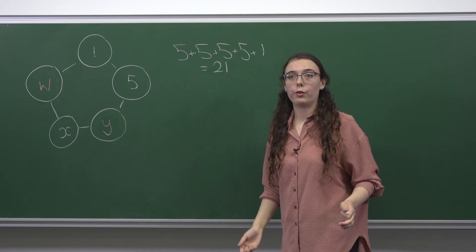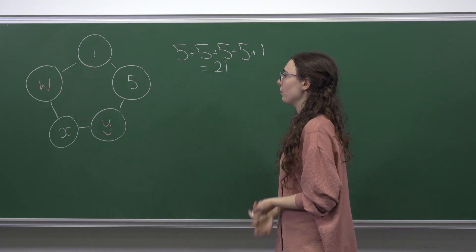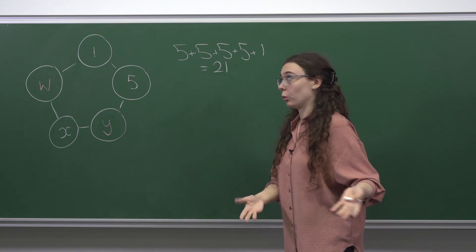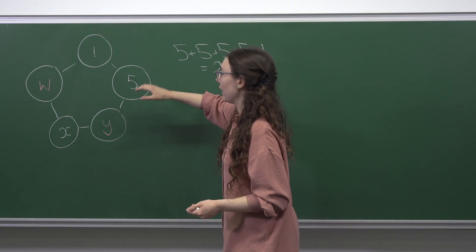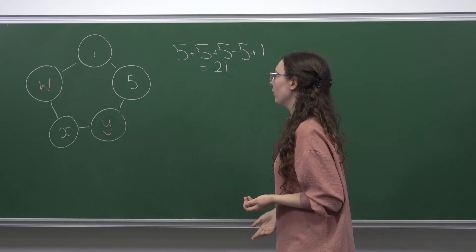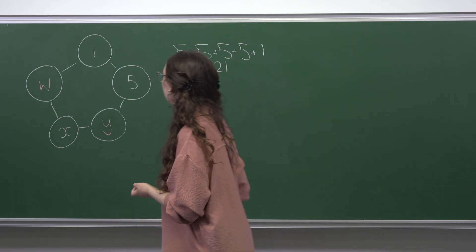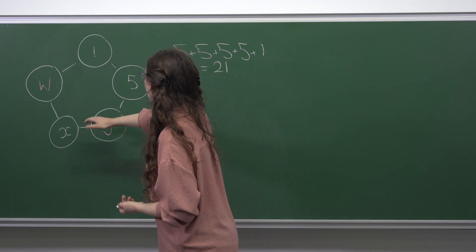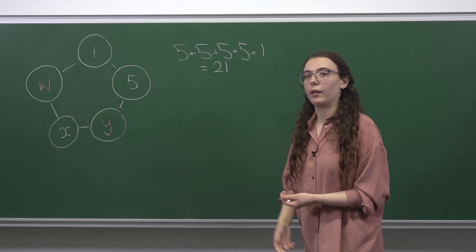Since we're trying to get all of the numbers between 1 and 21, this means that every number between 1 and 21 has to appear in exactly one way. So we definitely can't have any repetitions — if a number here were equal to a number somewhere else, that would be two ways of making the same number.